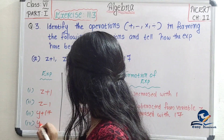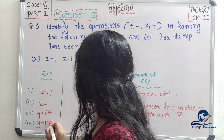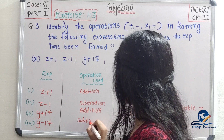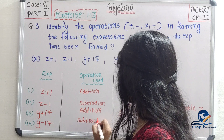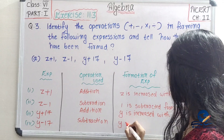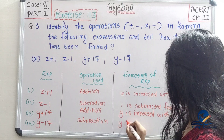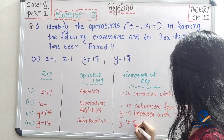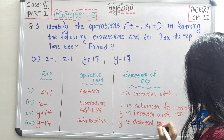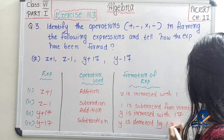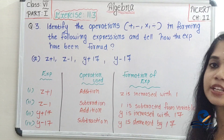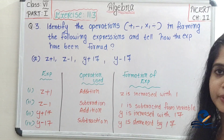Next one is y minus 17. y minus 17 is used with the operation subtraction. y is decreased by 17, meaning 17 is subtracted from variable y.